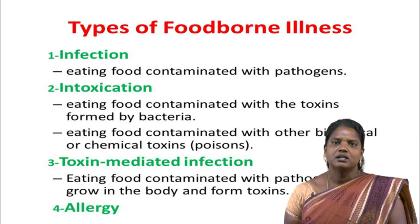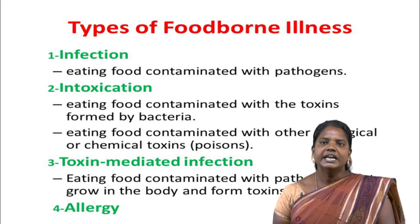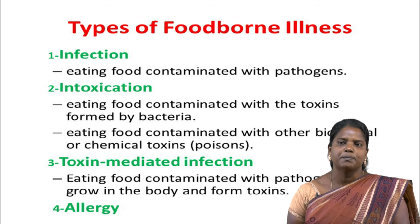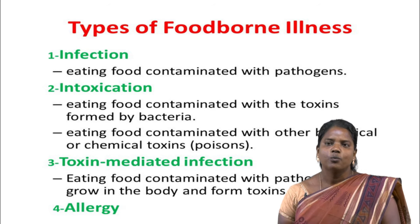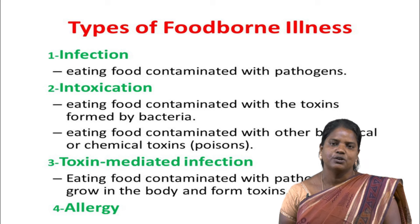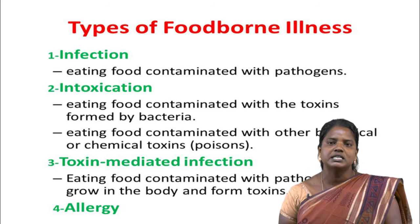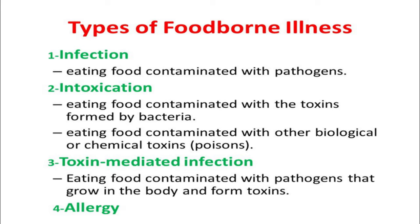There are four main types of foodborne illness. First is infection: eating food contaminated with pathogens. Second is intoxication: eating food contaminated with toxins formed by bacterial microorganisms, or with other biological or chemical toxins such as heavy metal poisons. Third is toxin-mediated infection: eating food contaminated with pathogens that grow in the body and form toxins. Fourth is microorganism allergy.